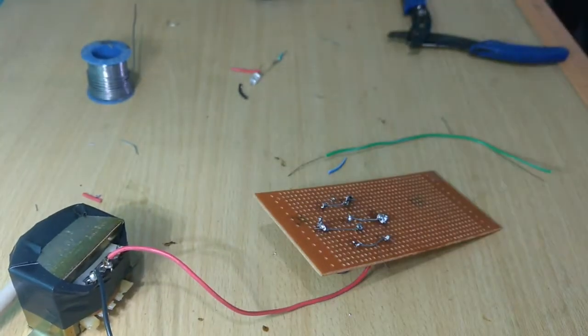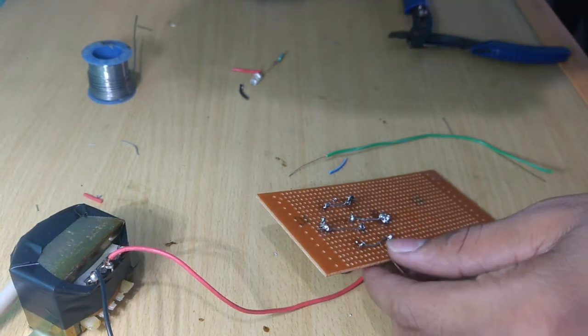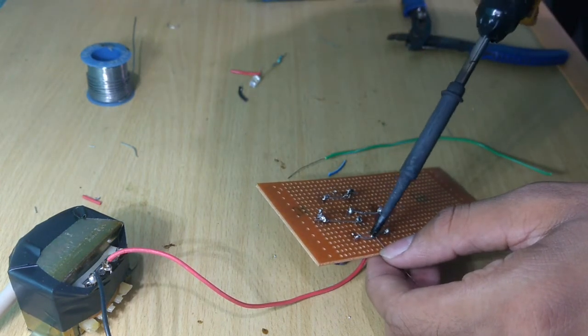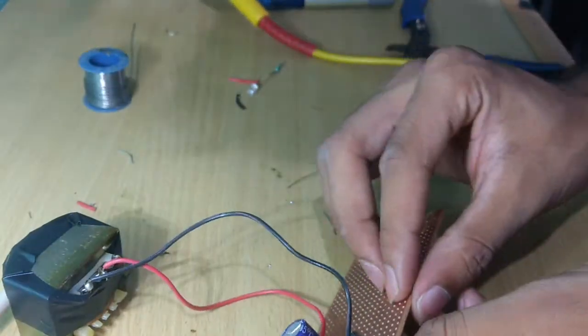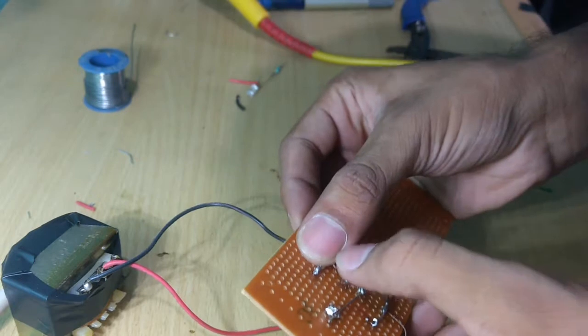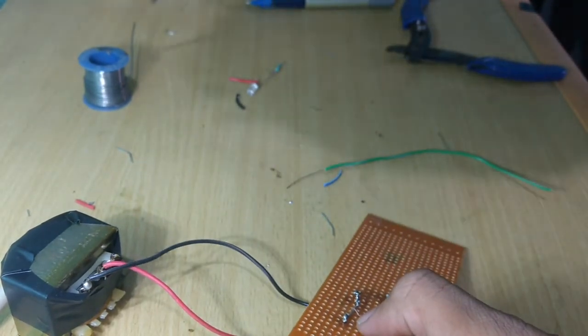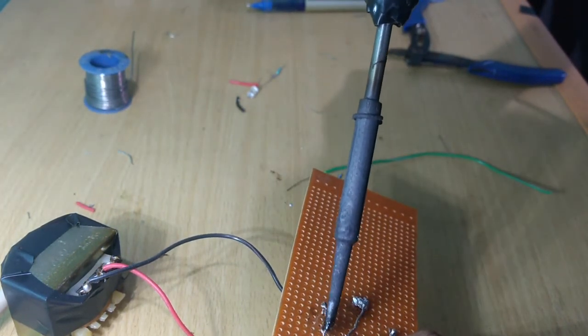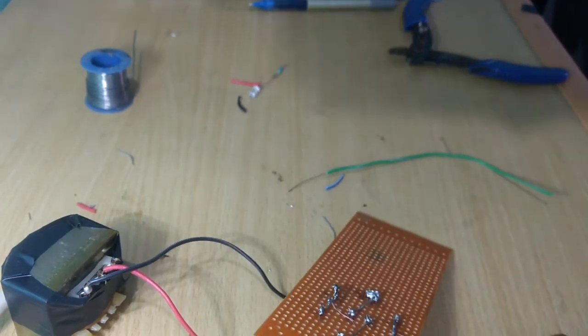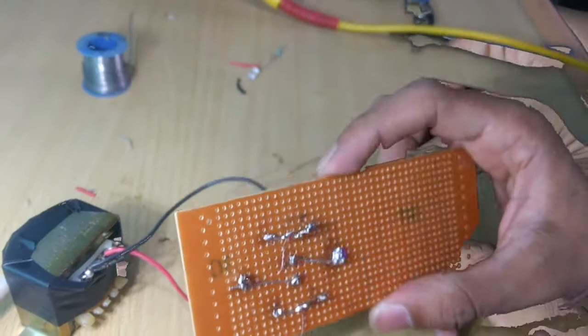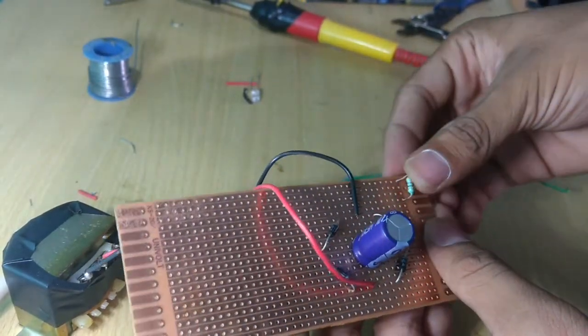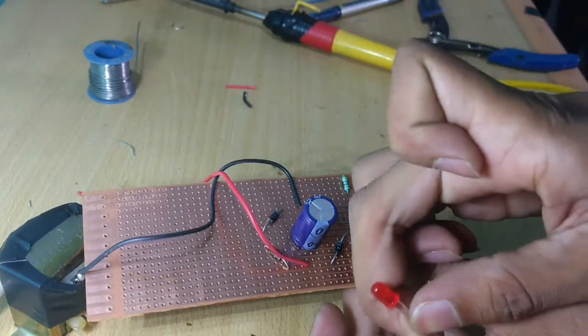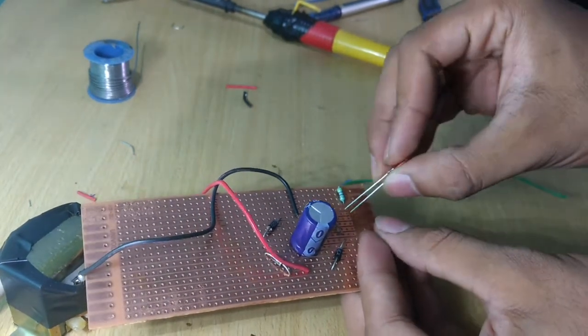And now connect the input sources, AC input sources, that is the two wires coming out from the transformer step down transformer, right there. Now insert a resistor and then an LED.